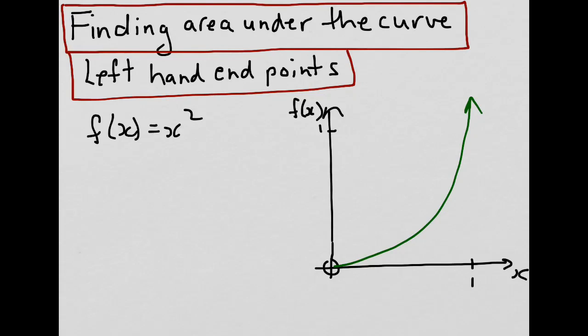One way to do this is to break the interval up into equal sub-intervals. So let's say we wanted to break it up into four equal sub-intervals, so that we would have a quarter, a half, and three quarters. So we've broken up the interval from 0 to 1 into four equal sub-intervals.